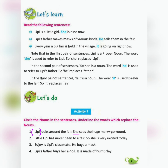In these sentences, some words are underlined. Number 1 — Lippy looks around the fair. She sees the huge merry-go-round. Here 'Lippy' is the noun — circle it; 'she' is the replacing word — underline it. Number 2 — Little Lippy has never been to a fair, so she is very excited today. 'Lippy' is the noun — circle it; 'she' is the replacing word — underline it. Number 3 — Shujoy is Lippy's classmate. He buys a mask. 'Shujoy' is the noun — circle it; 'he' is the replacing word — underline it.